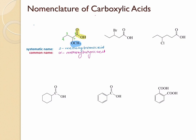Here again we have a carboxylic acid, but this time with bromine as a substituent. Numbering from the carboxylic carbon: one, two, three, four, five — that's the longest chain with five carbons, so this is pentanoic acid. Bromine is present at the third position, so the IUPAC name is 3-bromopentanoic acid. For the common name, this position is alpha and the next is beta, so it's beta-bromo. And for five carbons it's valeric — so beta-bromovaleric acid.